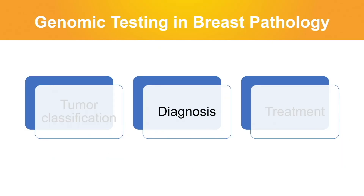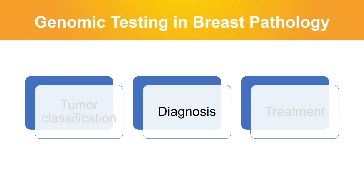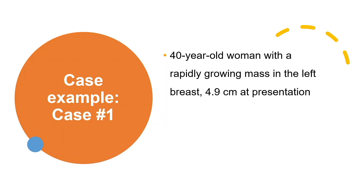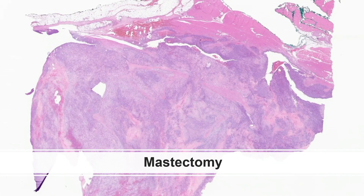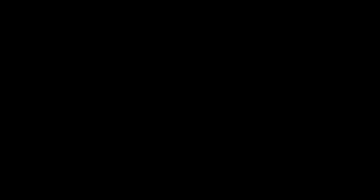I'll move on to case examples to show how we use molecular testing to help with diagnosis in difficult cases. Our patient was a 40-year-old woman with a rapidly growing mass in the breast, almost 5 centimeters at presentation. The patient had a core biopsy diagnosis and proceeded with mastectomy. I'll show you some images from her mastectomy specimen.